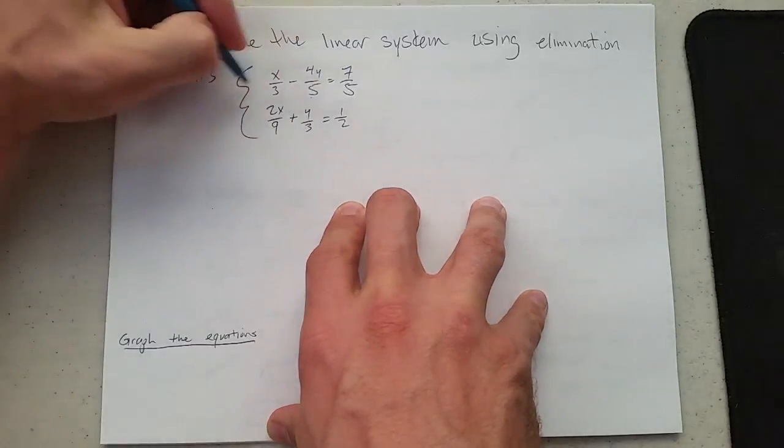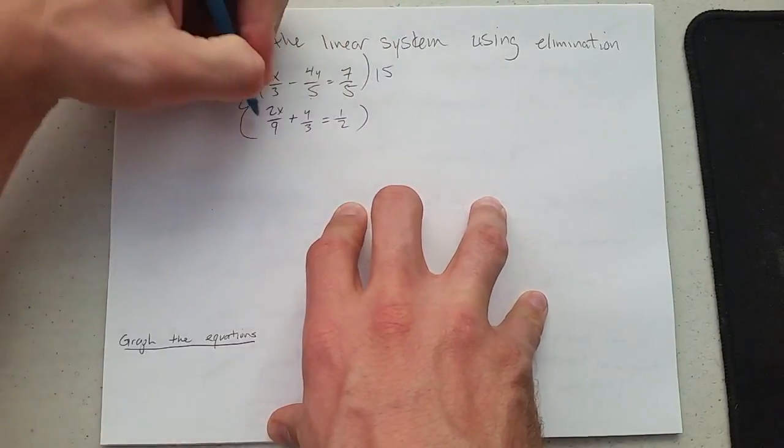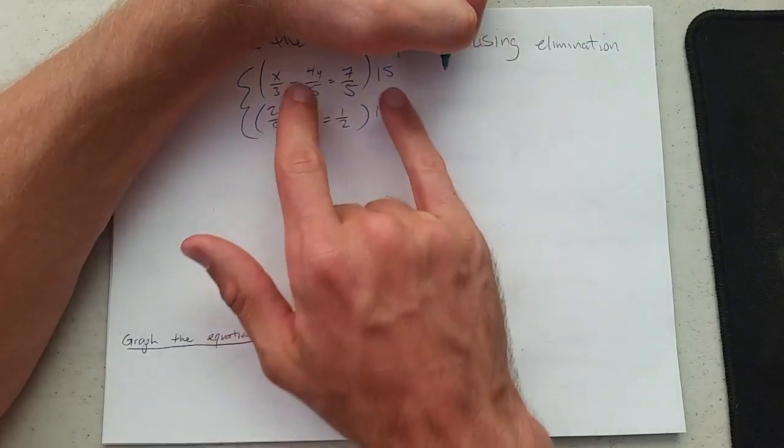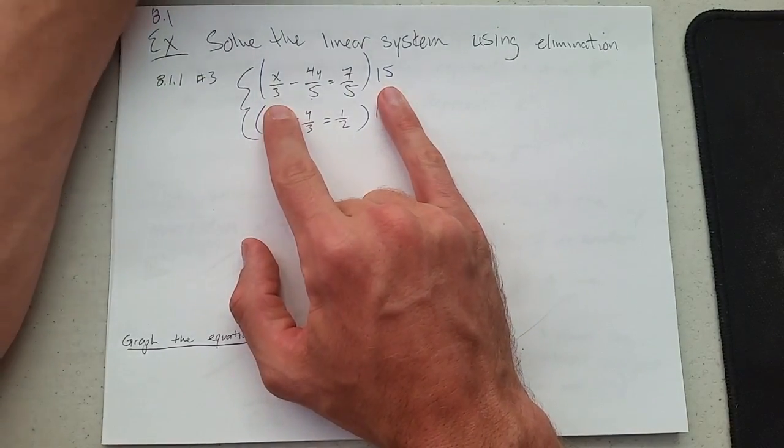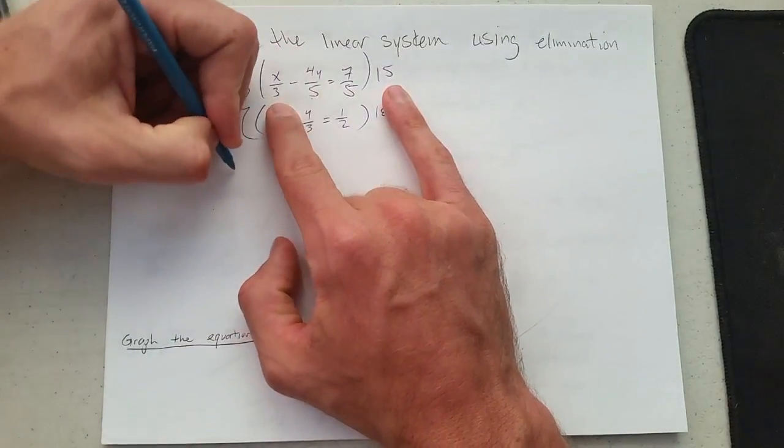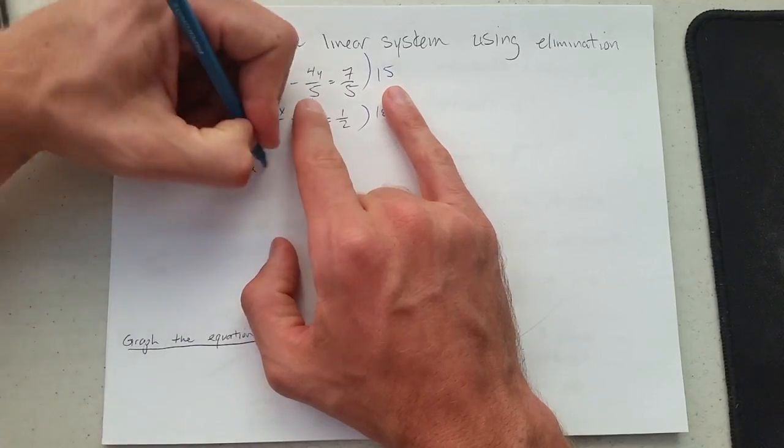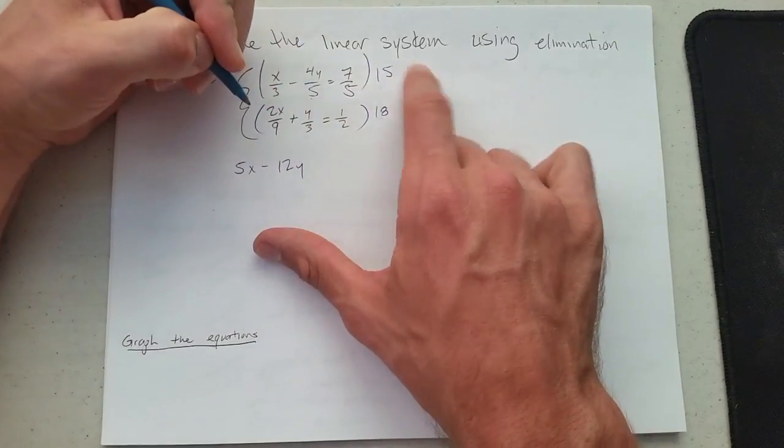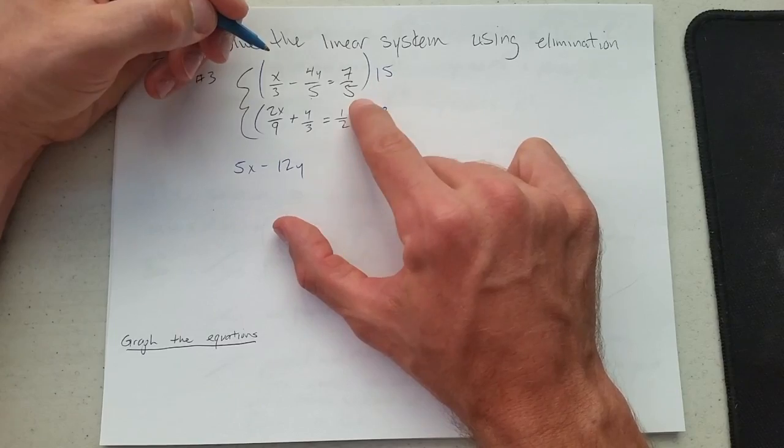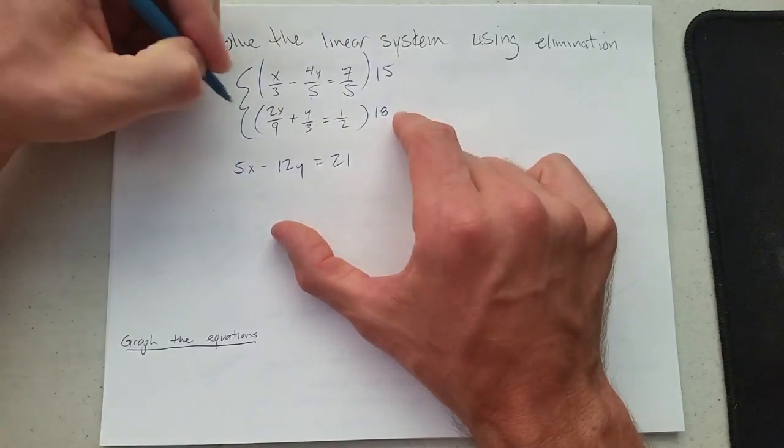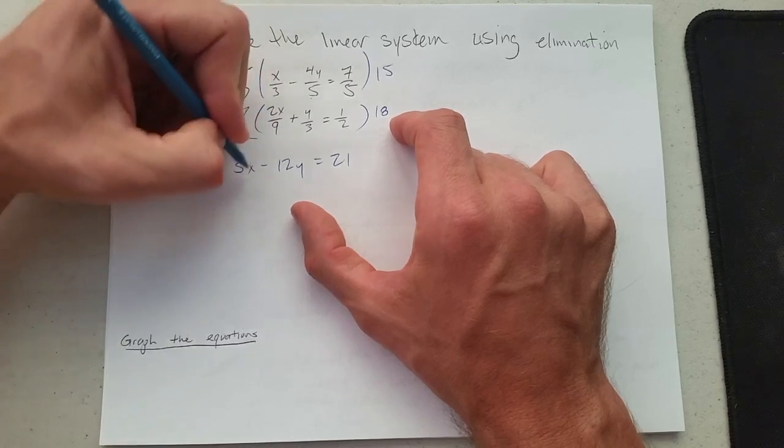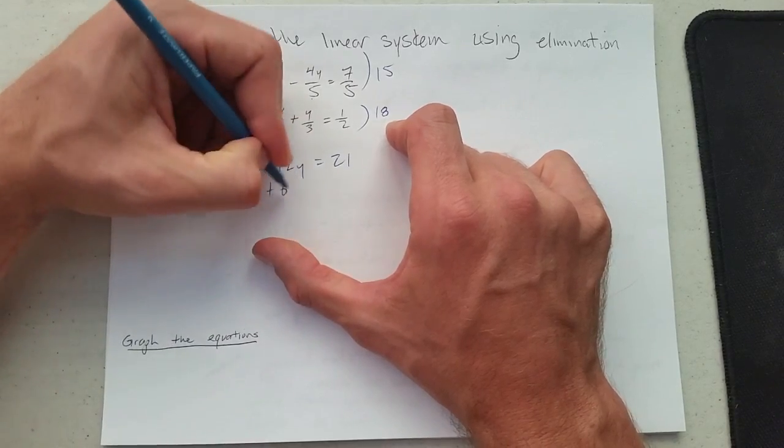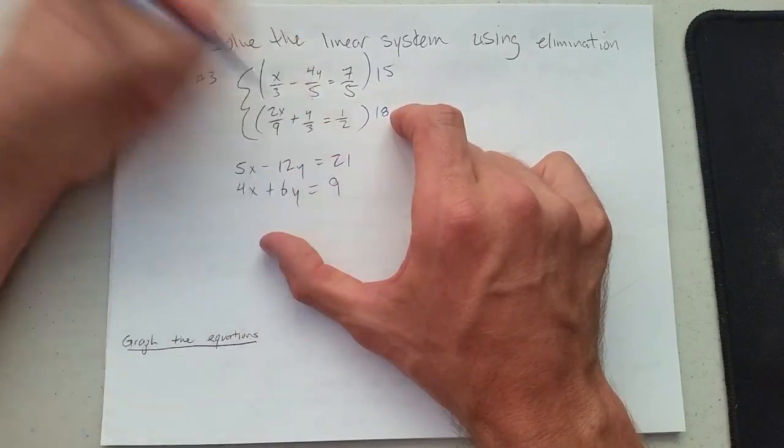I'll multiply this by 15 and this by 18. Be careful to distribute the 15 everywhere: 15 divided by 3 is 5, so we get 5x minus 4 times 3 is minus 12y, and 3 times 7 is 21. Down here, 18 divided by 9 is 2 times 2 is 4x, 18 divided by 3 is 6, so plus 6y equals 18 over 2 is 9.